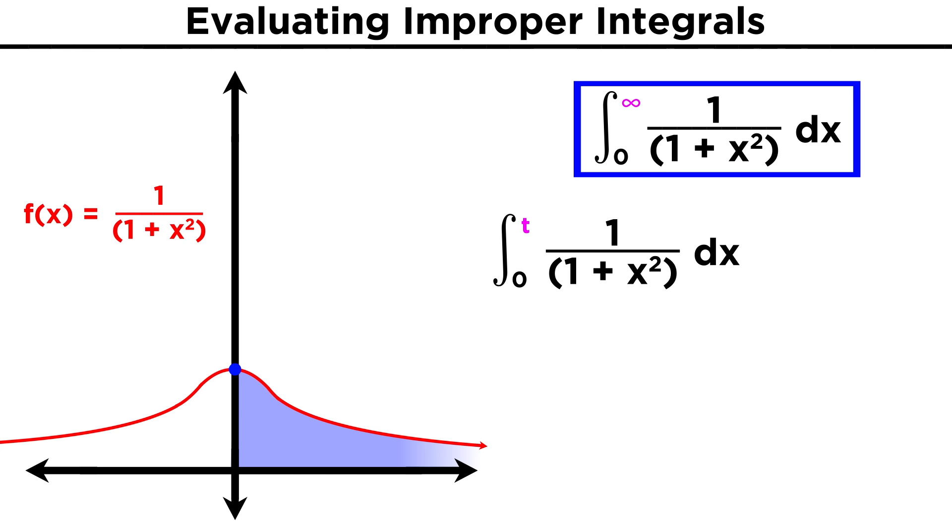So as we know, we change infinity to t and we integrate. If we consult our table of common integrals, this is actually a special one, as it fits the form of one over x squared plus a squared, and in this case a equals one, so we get inverse tangent of x.